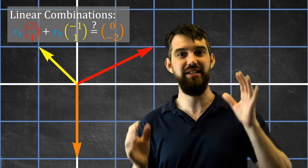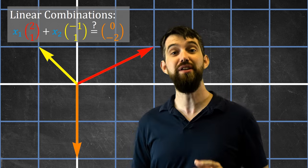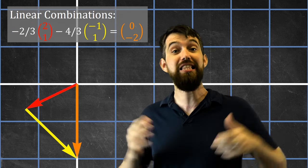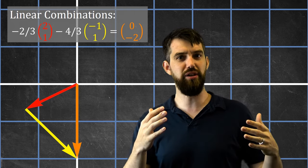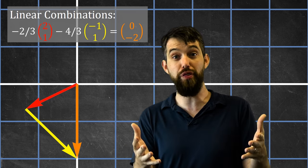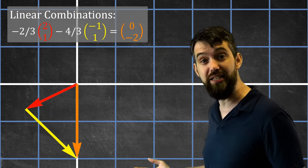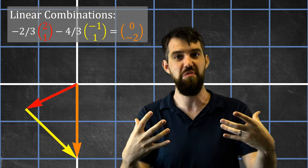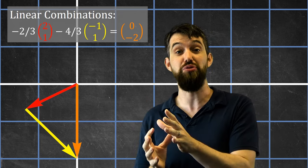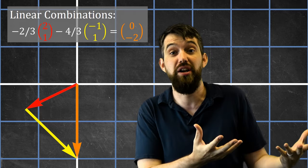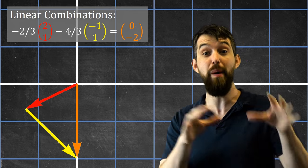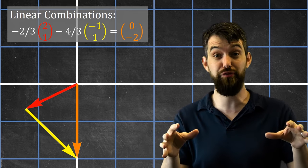After some computation, I figured out that if I plug in the coefficients -2/3 and -4/3, then it works out. Geometrically, when I take the red vector stretched by -2/3 and the yellow vector stretched by -4/3, the tip-to-tail addition of these stretched vectors adds up to exactly (0,-2). So (0,-2) can indeed be written as a linear combination of the red and the yellow vectors. I'll leave it as a challenge for you to derive the -2/3 and -4/3 yourself; we'll see exactly how to do that in a later video.